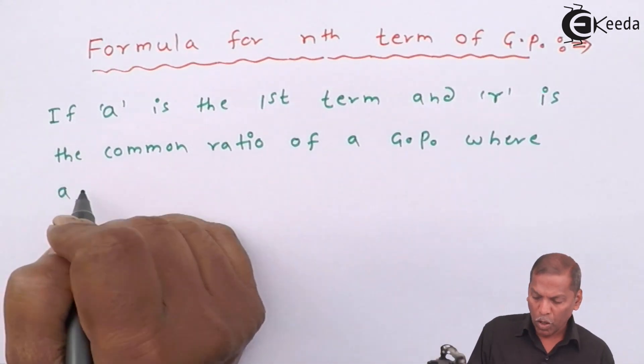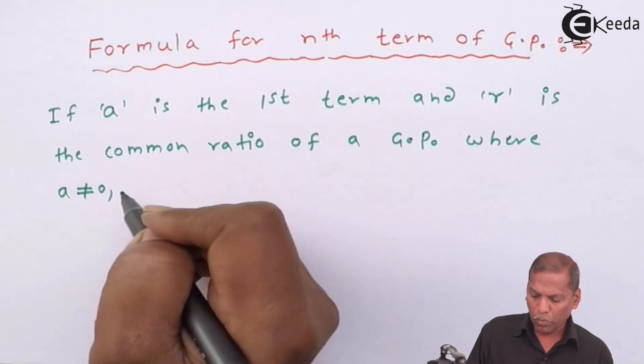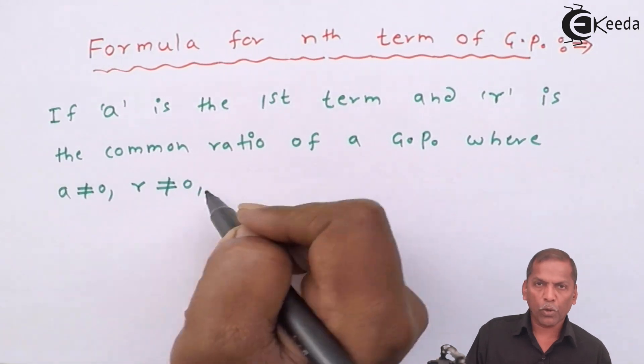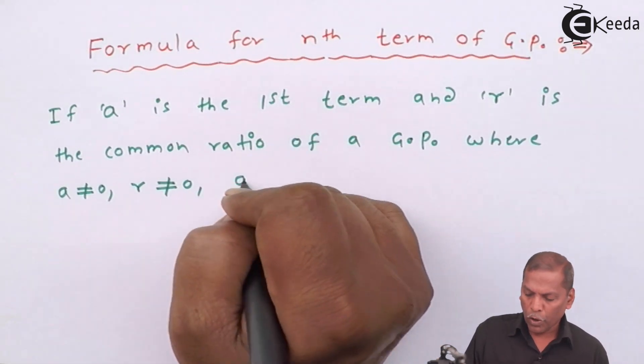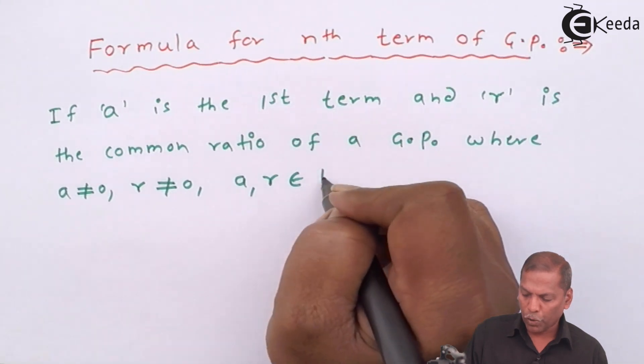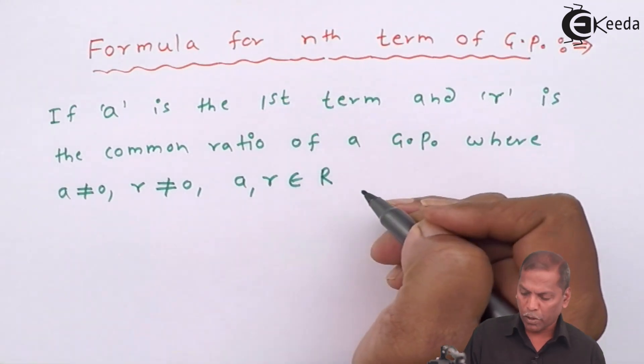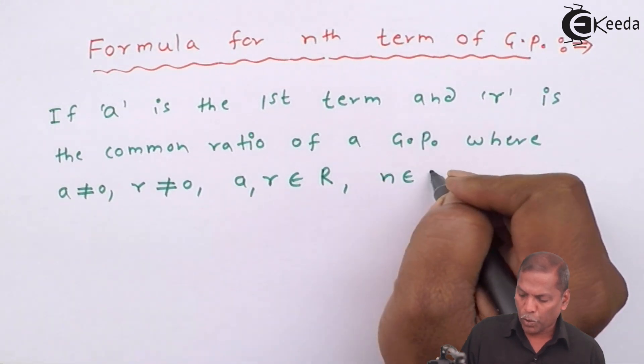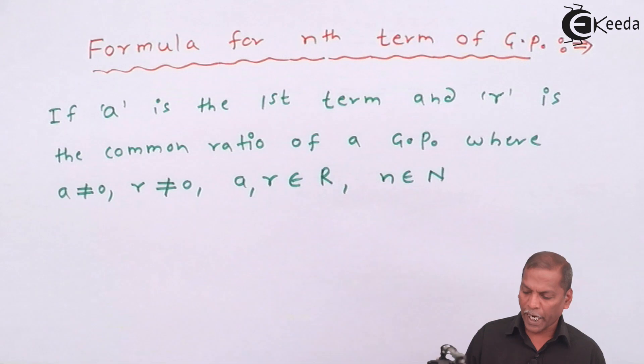where a not equal to 0, r also not equal to 0, both a and r belongs to set of real numbers and n belongs to set of natural numbers.